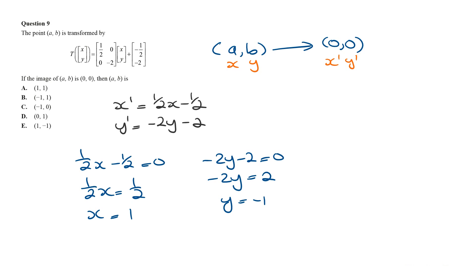And because x and y are the original points, and these are the points of A and B, then we can say that the points A and B has to be 1 and negative 1, giving us the answer option E as the answer for this question.